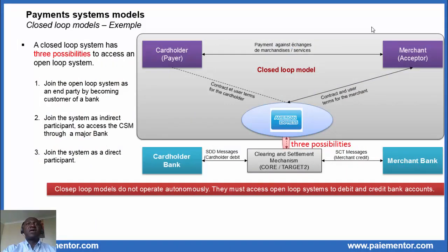On the picture, we see a simplified closed loop model with one consumer, the card holder, one merchant, and the Amex payment system. That simplified model is also called the three-corner model. As already said, Amex must access the open loop system — otherwise it cannot debit and credit the accounts of end parties. There are three possibilities for a closed loop system to do that. The first possibility is for the closed loop system to join the open loop system as an end party by becoming a customer of a bank. It will then instruct its bank to debit consumer accounts through direct debit orders and to credit merchant accounts through direct credit orders.